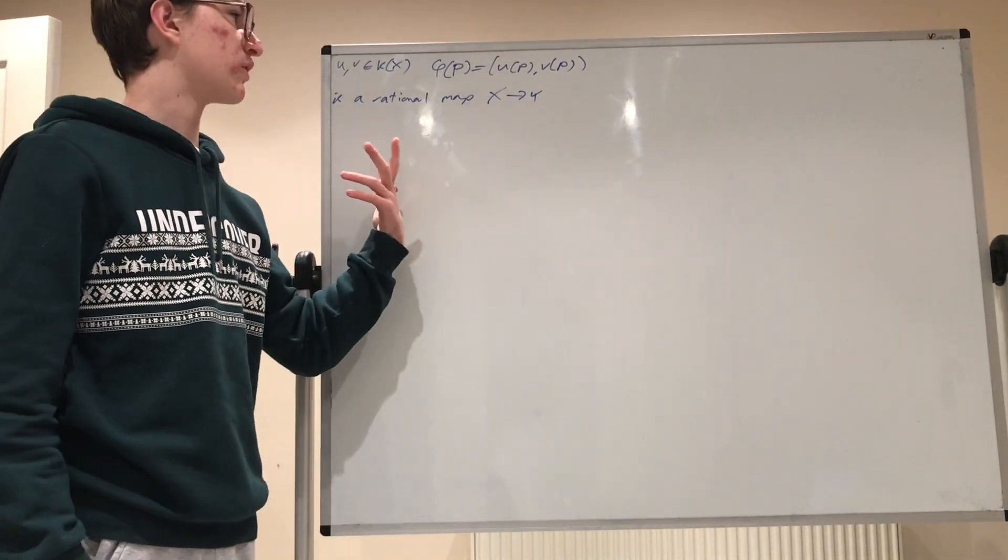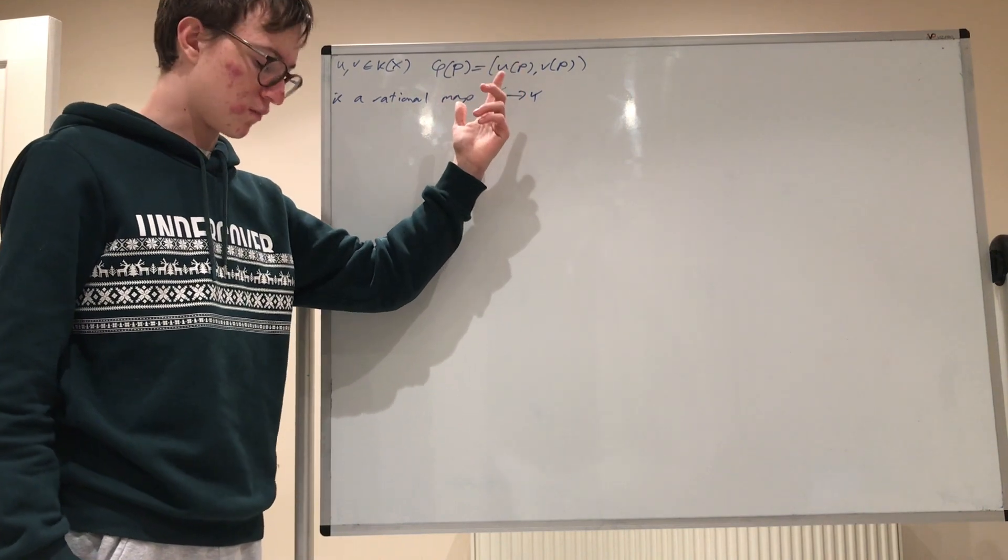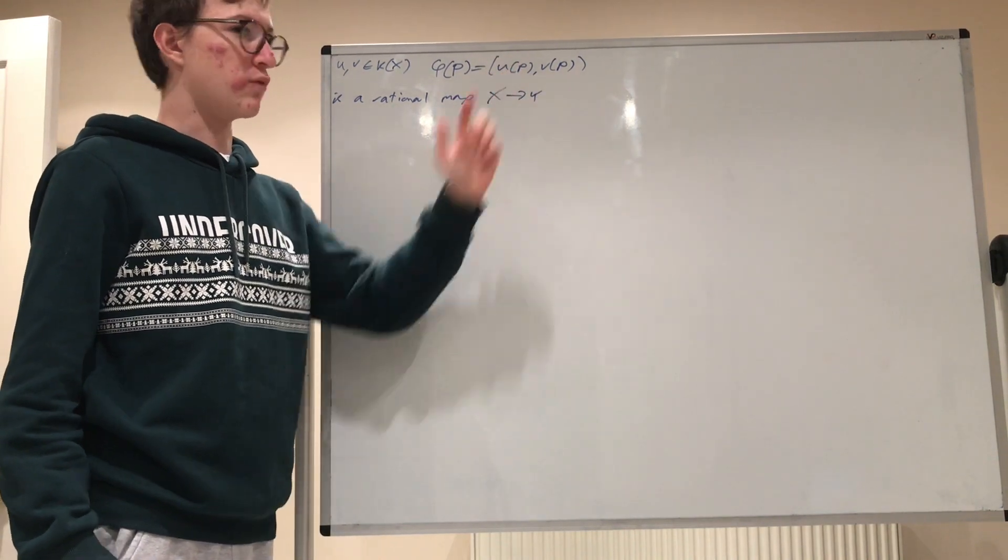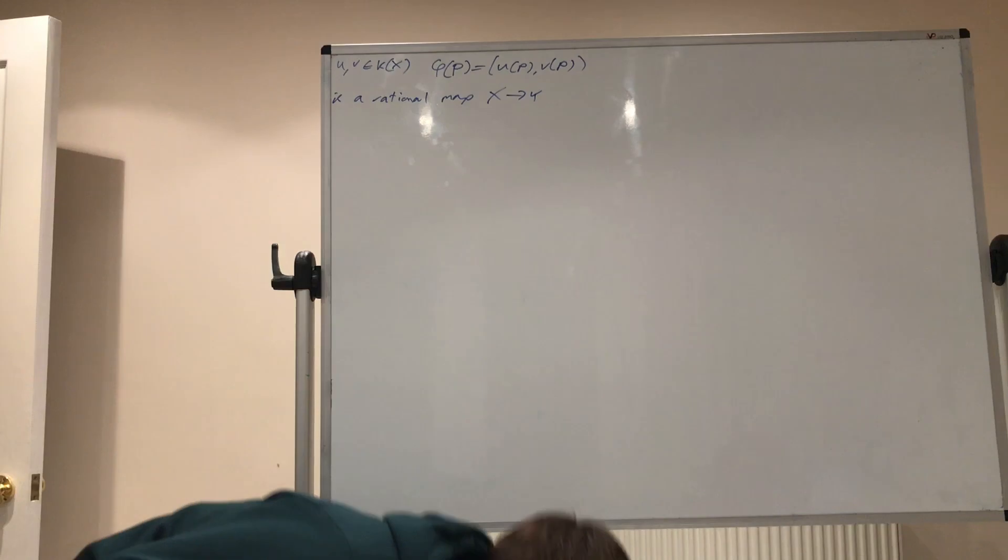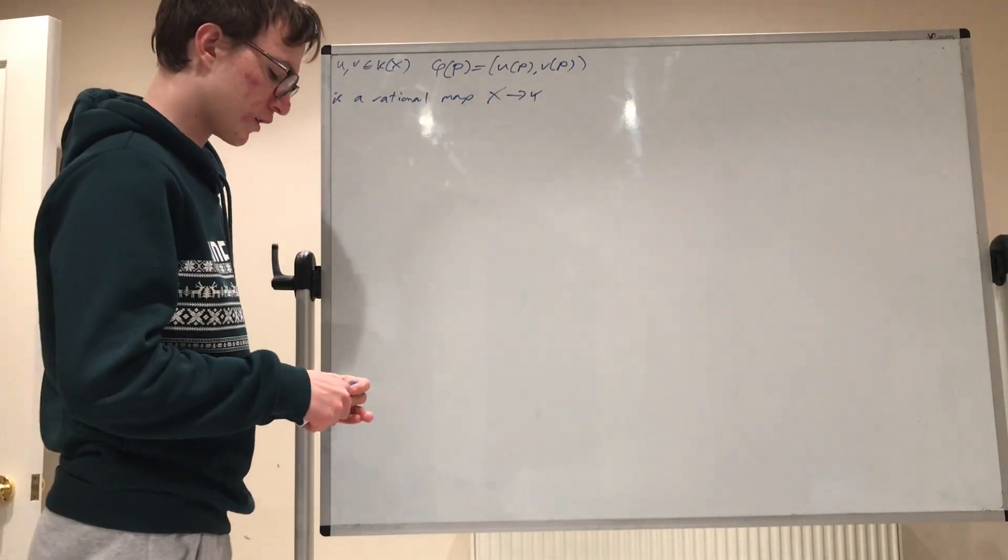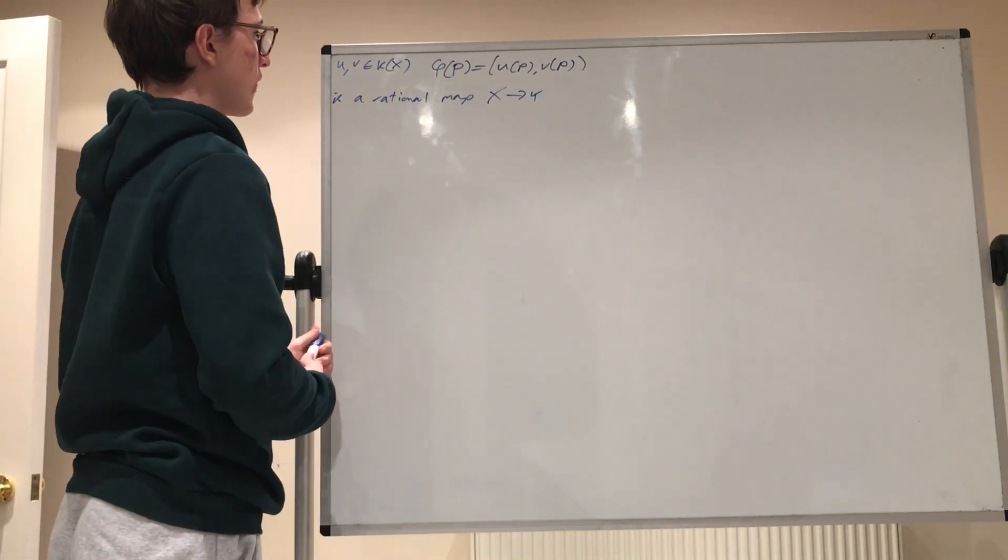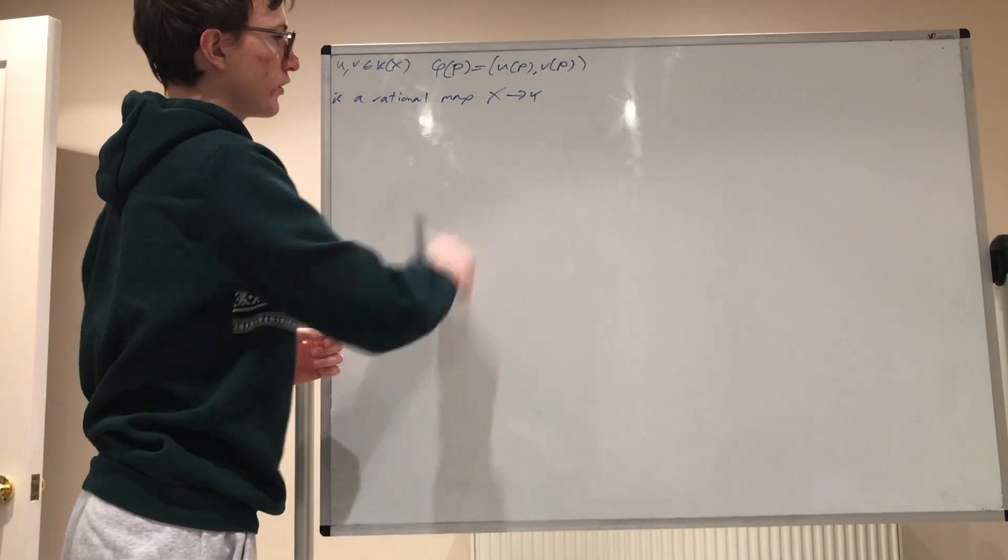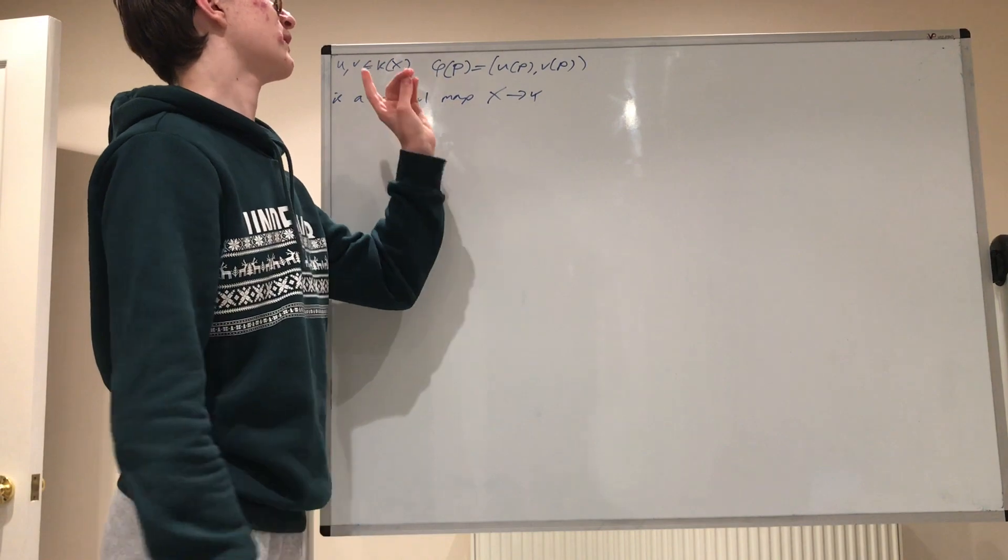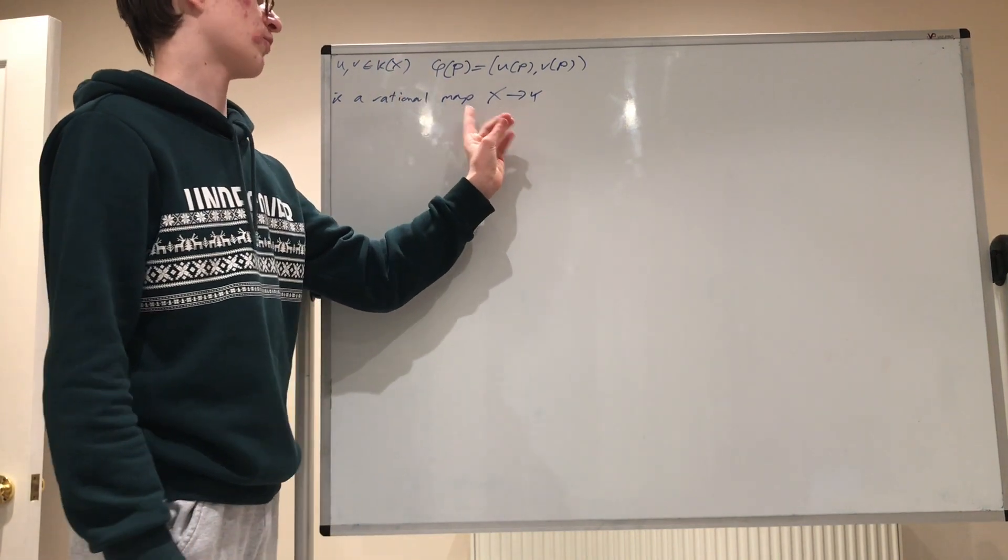Apart from, of course, a finite subset where u of p or v of p might not be defined, that's just a finite subset anyway. So, for all p where u and v are defined, if phi of p is always in y, then phi is a rational map from x to y.